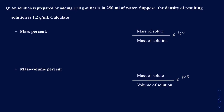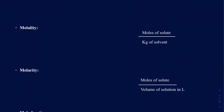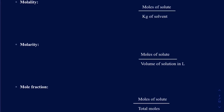Let's solve a concentration problem that's going to be a little bigger because it contains all the concentration units. The question says a solution is prepared by adding 20 grams of BaCl₂ in 250 milliliters of water. The density of the resulting solution is 1.2 grams per milliliter, and you need to calculate mass percent, mass volume percent, molality, molarity, and mole fraction.